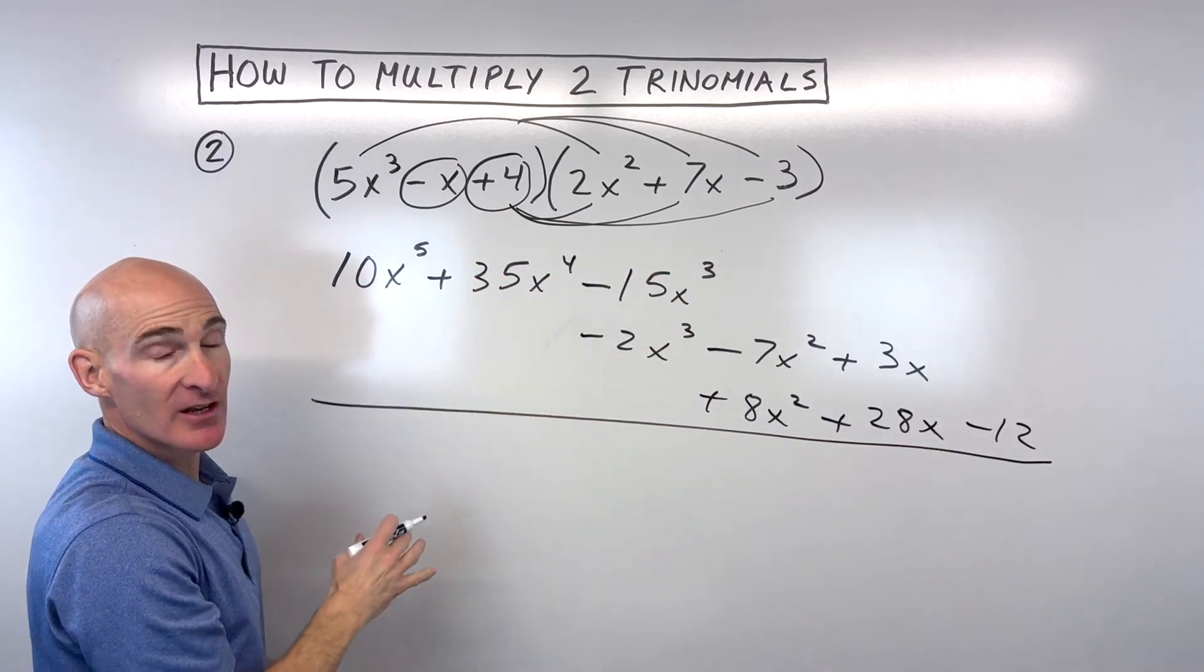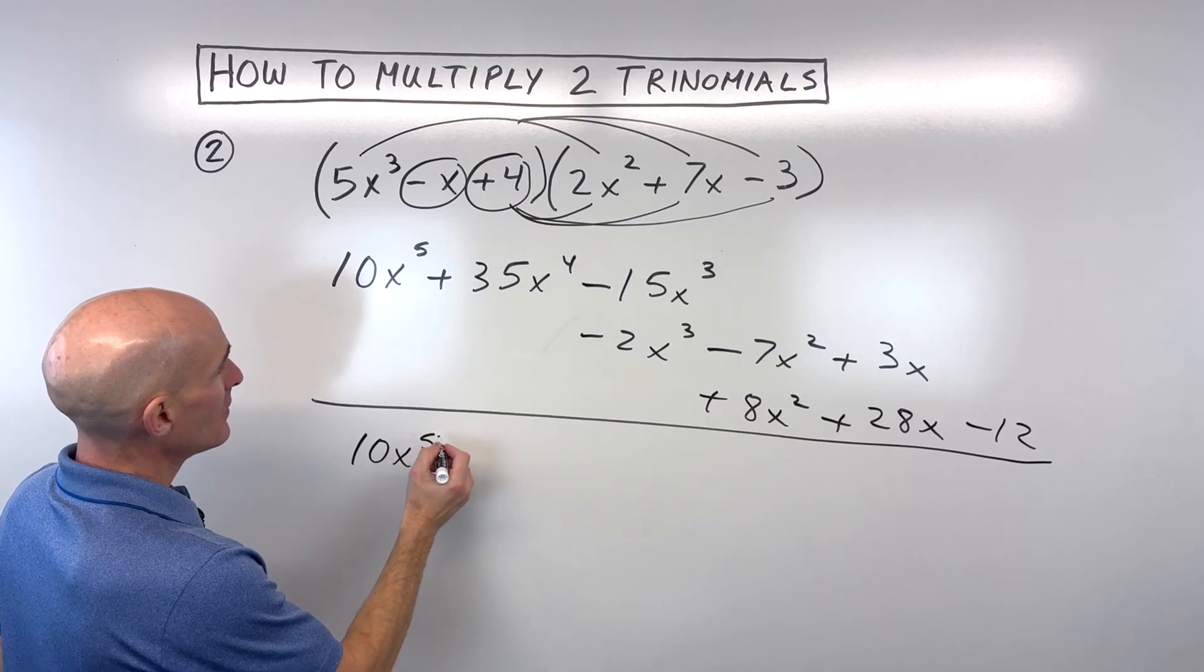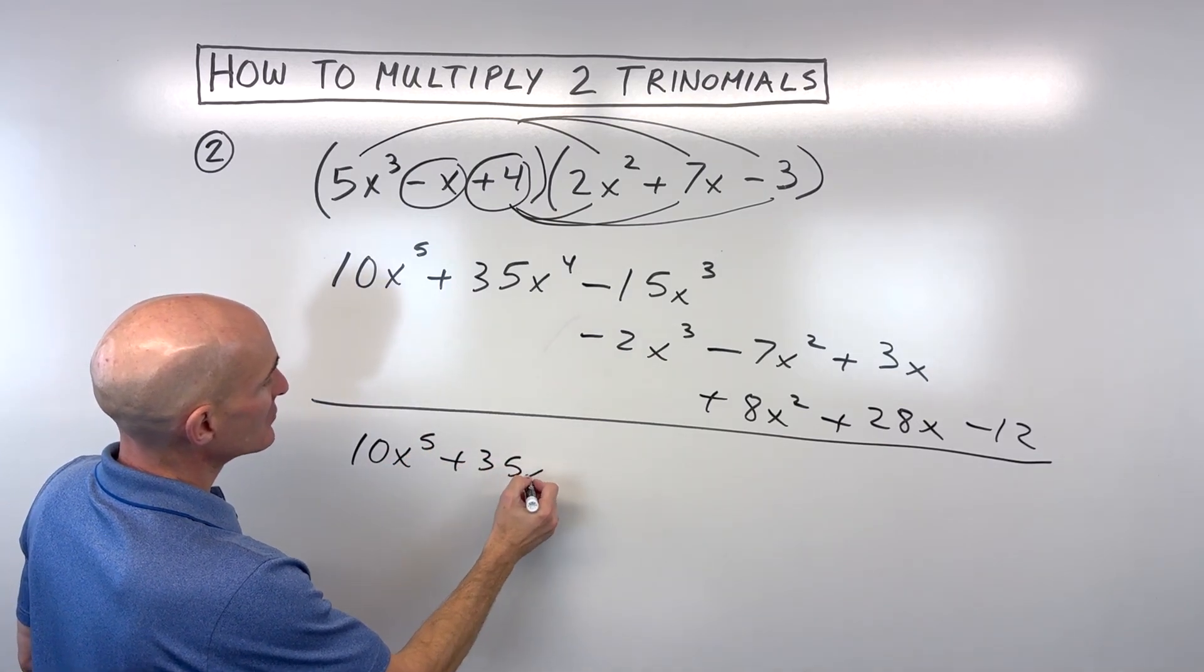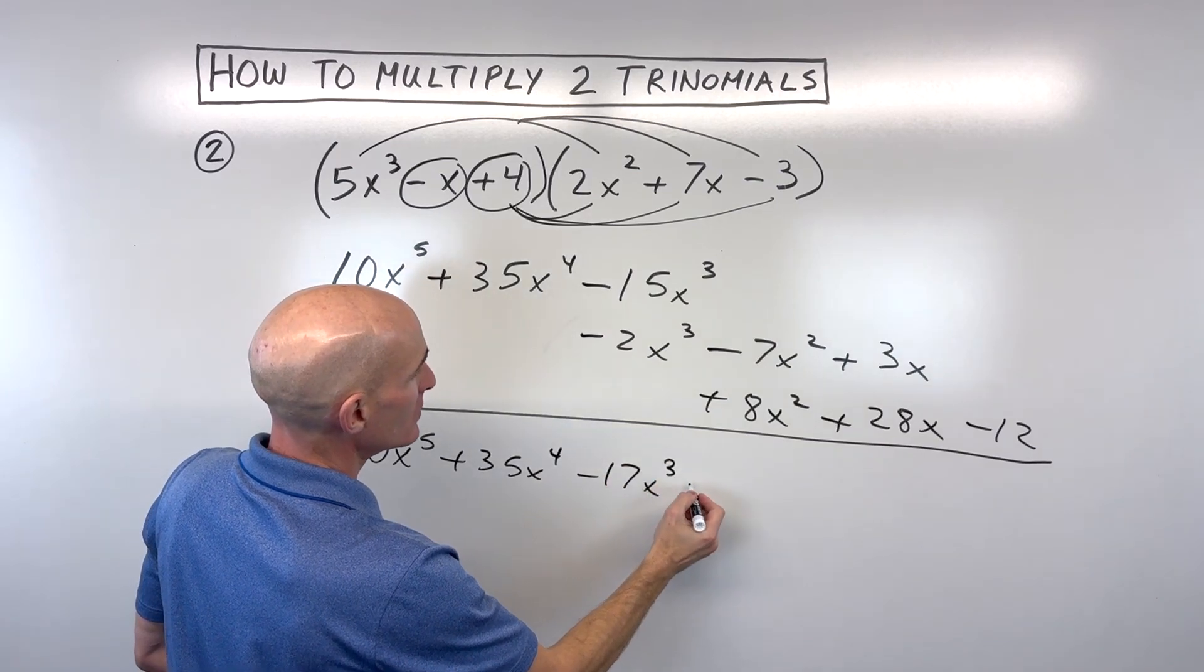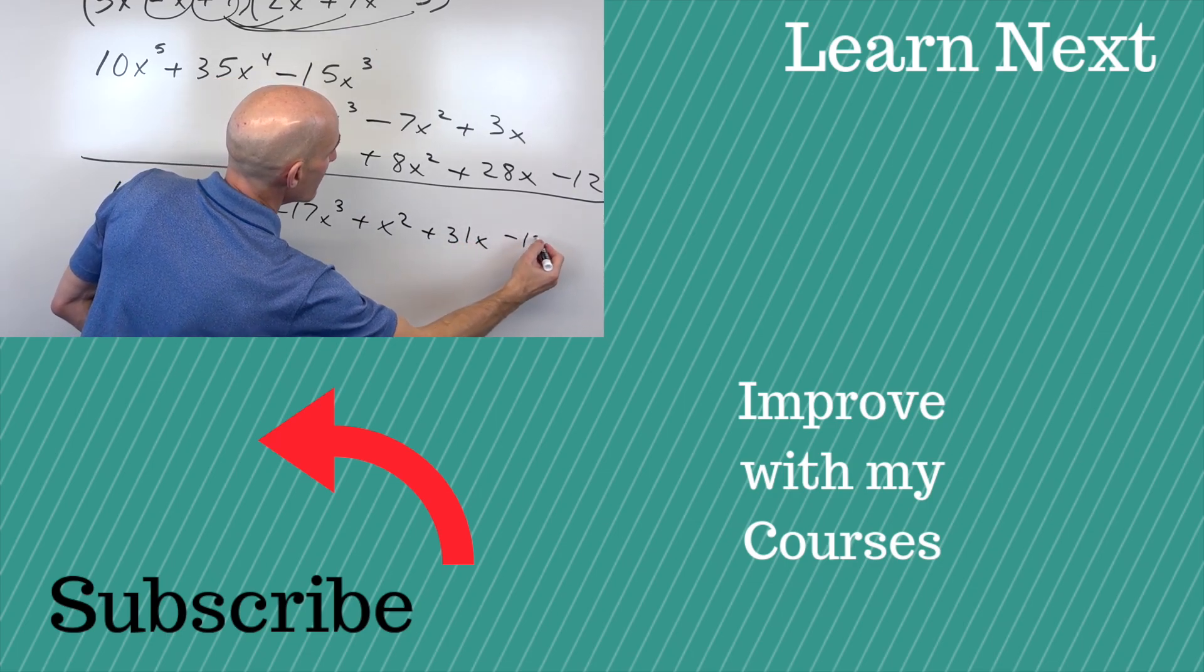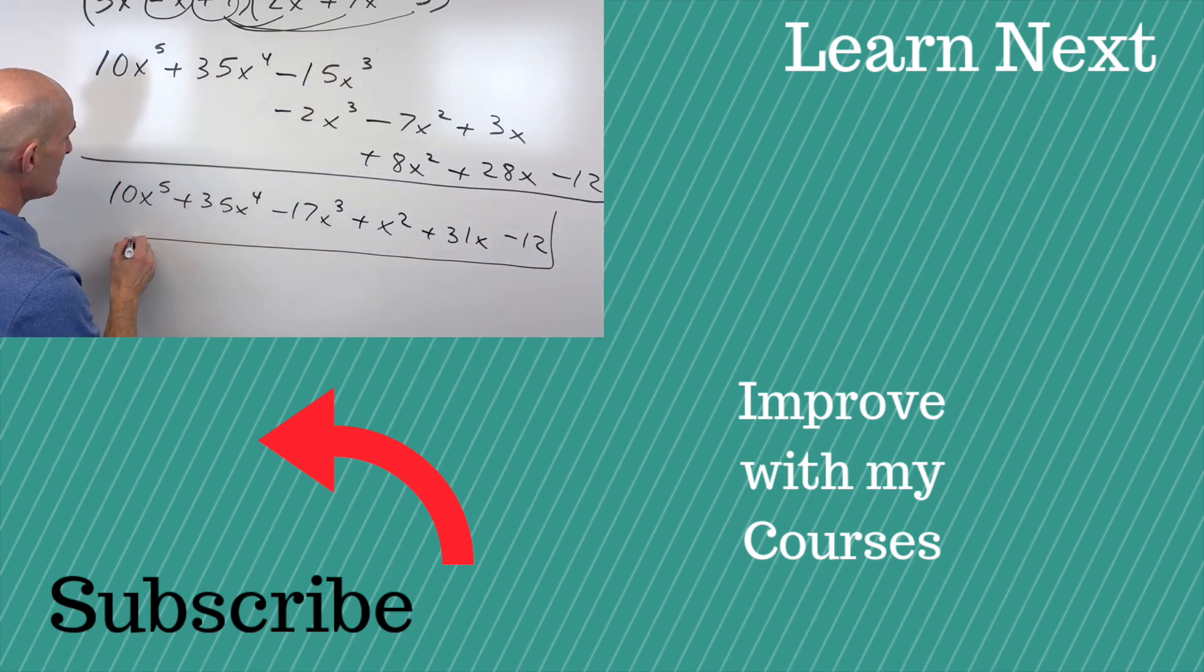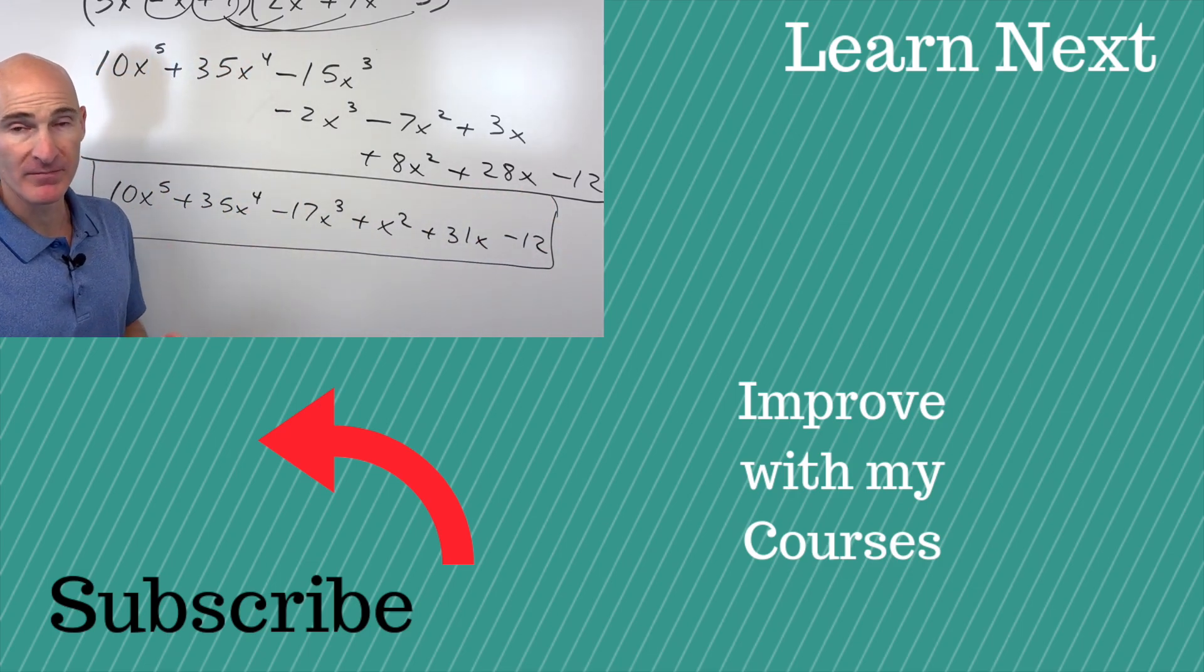So now all we have to do is combine like terms. So we've got 10x to the 5th plus 35x to the 4th minus 17x cubed plus x squared plus 31x minus 12. And that's our final result. So you want to put it in descending order from the highest power down to the lowest. And you got it.